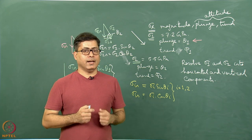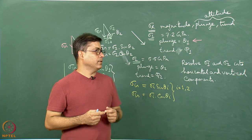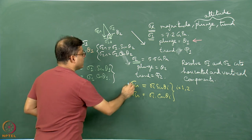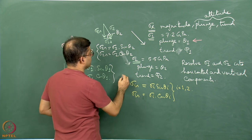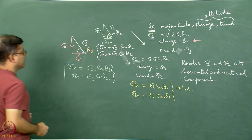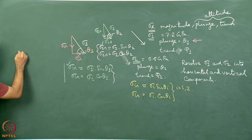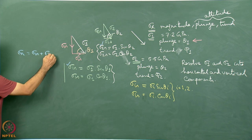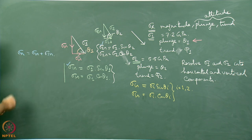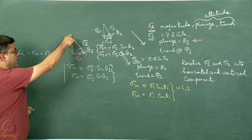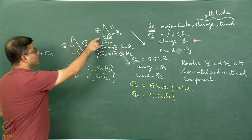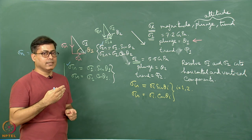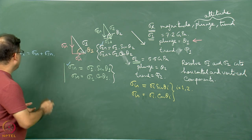Now I add up the vertical components. Sigma 1n is the vertical component of sigma 1, and sigma 2n is the vertical component of sigma 2. So the resultant normal stress is: sigma_n = sigma 1n + sigma 2n. I am adding them because sigma 1n acts vertically down and sigma 2n also acts vertically down — since they are in the same direction, the two stresses can be added up.